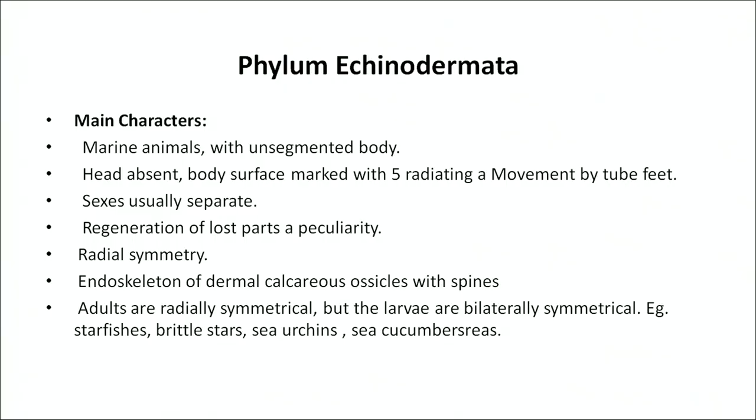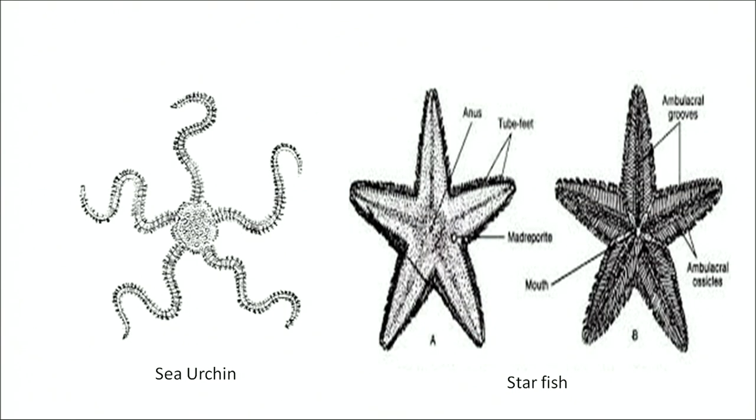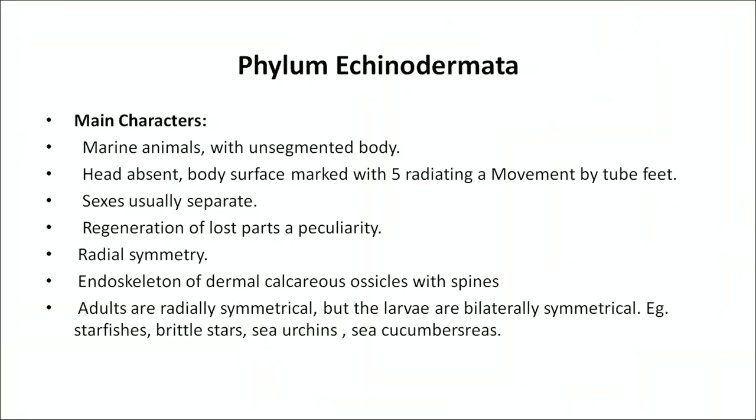The next phylum is phylum Echinodermata, which includes starfish, brittle star, sea urchin, and sea cucumber. All are marine animals with unsegmented bodies and no head. Body surface is marked with five radiating areas. They have radial symmetry. Endoskeleton of dermal ossicles with spines is present. They move by tube feet. Sexes are usually separate. Regeneration of lost parts is a peculiarity — they show the regeneration process.